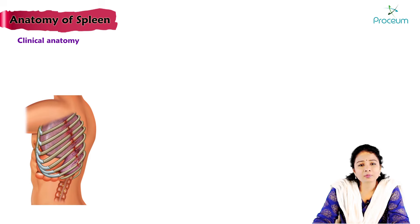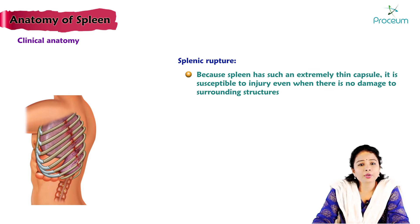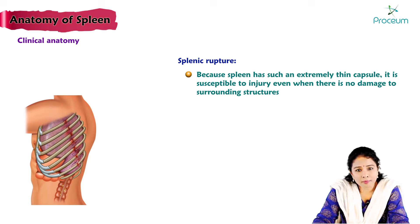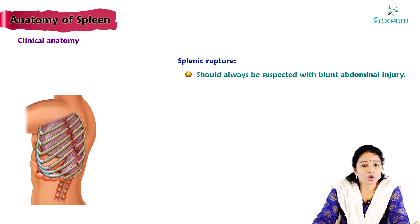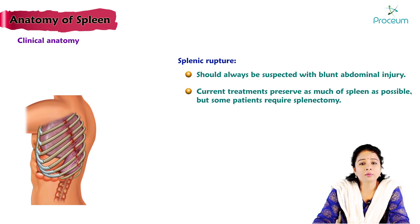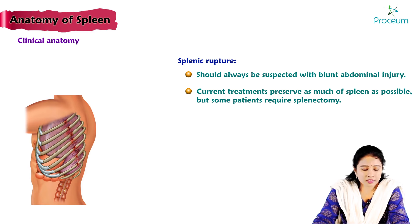Clinical aspects — splenic rupture: because the spleen has an extremely thin capsule, it is susceptible to injury even when there is no damage to surrounding structures. Due to its high vascularity, when ruptured it bleeds profusely into the peritoneal cavity. Splenic rupture should always be suspected with blunt abdominal injury. Current treatments aim to preserve as much of the spleen as possible, but some patients require splenectomy. This completes the normal anatomy and clinical aspects of the spleen.